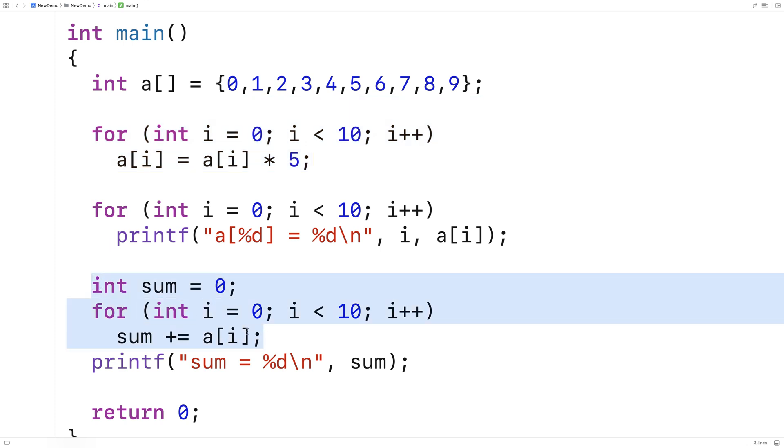Then we're summing the elements and outputting the result. All of this code here is really the actual purpose of our program. This code here is intended for debugging. After we've done some work with the array, we output all of the values in the array. Programmers often throw this sort of code into their programs to figure out what's going on.